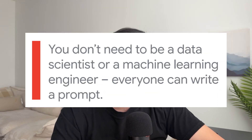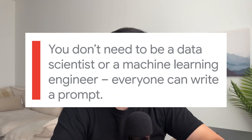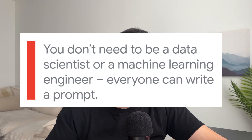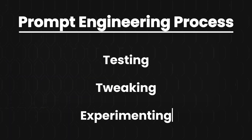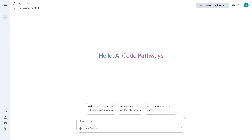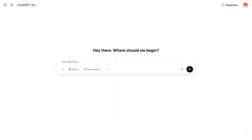You're basically giving really precise instructions to a smart robot. The key for prompt engineering is that you don't need to be a technical expert — anyone can write a prompt. But the better you tailor your words, the more accurate your output will be. By testing, tweaking, and experimenting with your prompts, you can really unlock the full potential of AI models like Google Gemini, ChatGPT, and Claude.